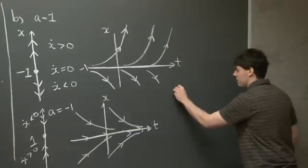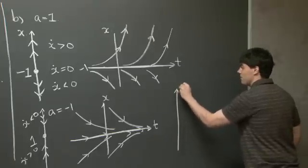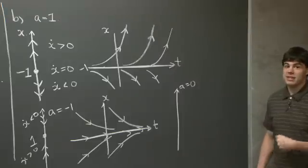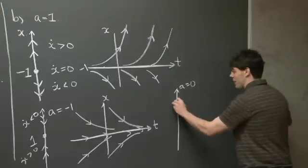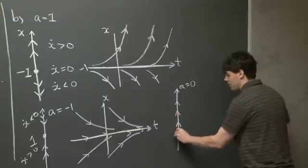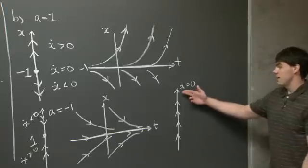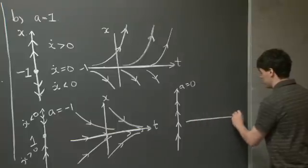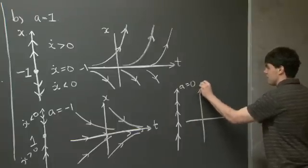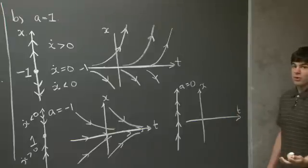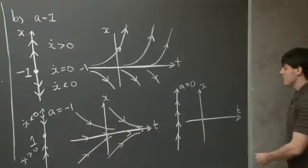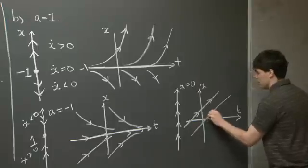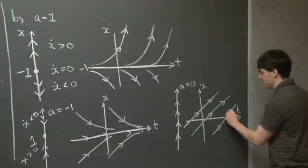And now lastly, we have the third case, which is when a equals 0. In this case, there are no critical points. In fact, x dot equals 1, so x dot is positive for all values of x. Our phase line is just a line with arrows pointing upward. If I were to sketch some solutions on axes x and t, there are no critical points and x is just increasing, so the solutions are going to look like straight lines — a family of straight lines.